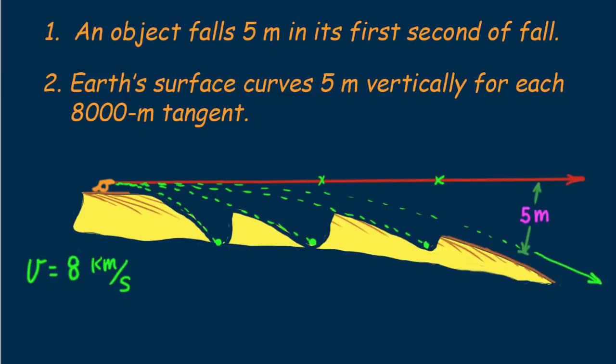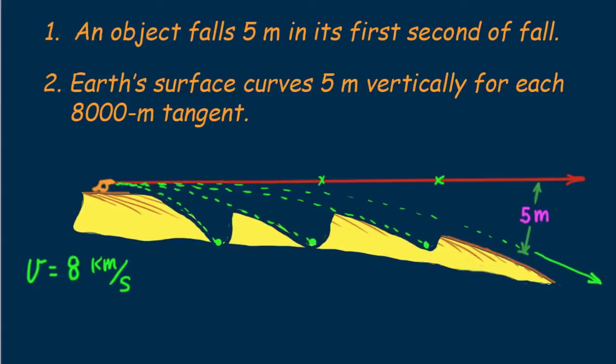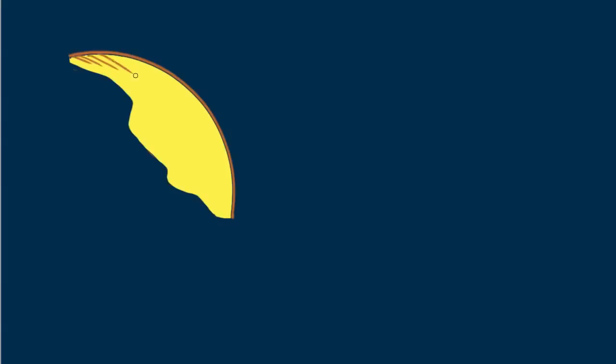Note something interesting since there's no air drag to slow it down when the cannon ball gets to the 8 kilometer distance it's moving just as fast as initially. So it would repeat falling beneath a new tangent every second unless some force interrupts it it would fall indefinitely. It would be an earth satellite. Now 8 kilometers per second doesn't sound fast but convert it to miles per hour and you get 18,000 miles per hour.